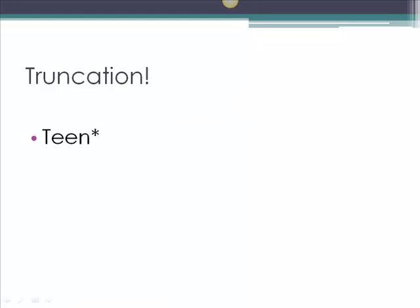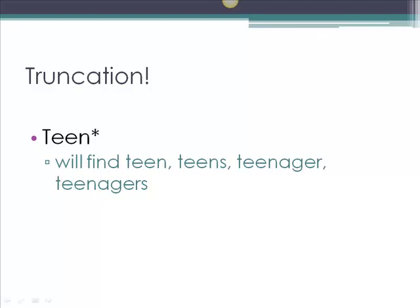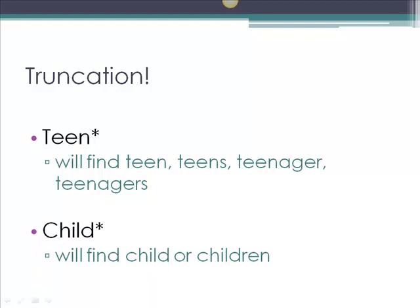One final tip: you can find additional sources by using a search trick called truncation. If you take the root of a word like teen and put an asterisk at the end, you will retrieve results containing the words teen, teens plural, teenager, and teenagers plural. Another example would be child with an asterisk — we will search for child or children.